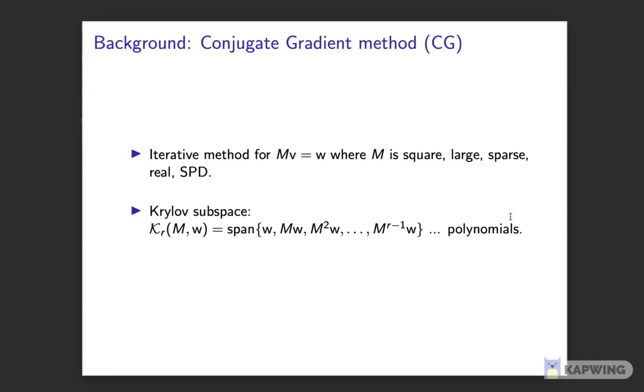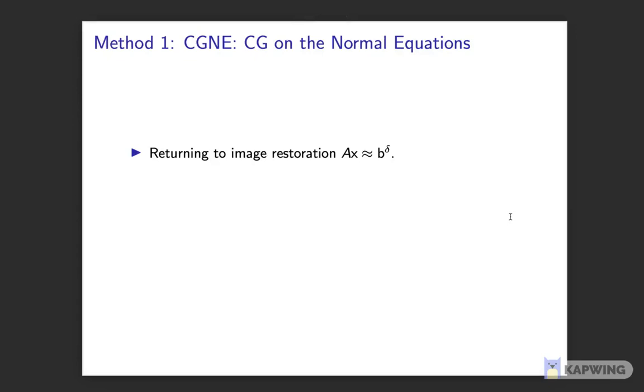I don't have time for details about CG, but the following two points are important. It applies where the matrix is symmetric positive definite, and it generates a basis for this Krylov subspace, which you can think of as polynomials in M multiplied with w.